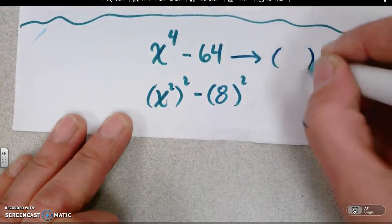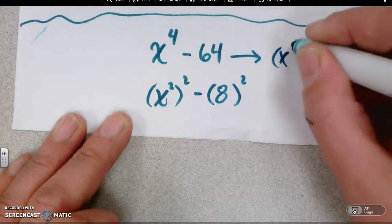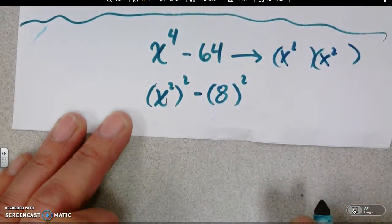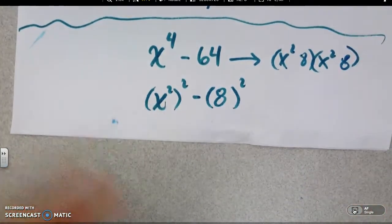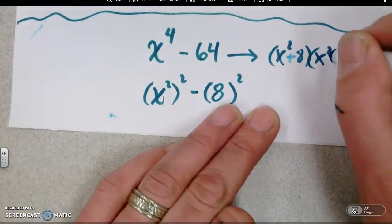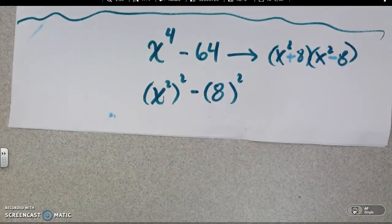Or, you know, this way x squared x squared and 8 and 8 and one must be plus, one must be minus. That's the key.